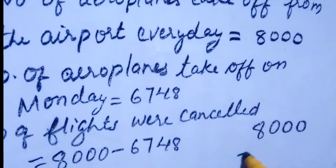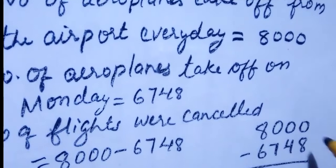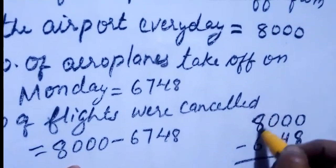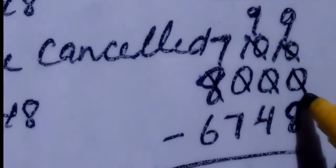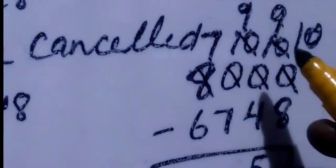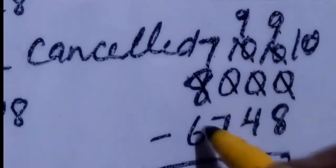Let us solve 8,000 minus 6,748. You cannot subtract 8 from 0 and cannot carry from the neighbors, so carry from 8 — 7 remains. You have 10; carry again to get 9 here and 10 there; carry again to get 9 and 10 in the ones place. 10 minus 8 is 2. 9 minus 4 is 5. 9 minus 7 is 2. 7 minus 6 is 1. So 1,252 flights were cancelled.